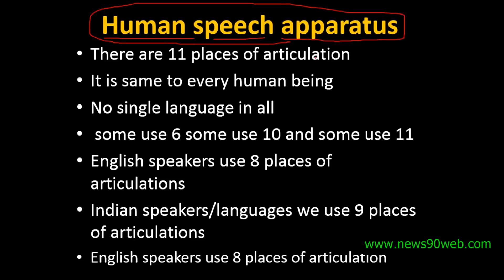Where is the sound produced? Where is the mouth? These are the articulation places. There are 11 places of articulation in total. In India, 9 places are used. English speakers use 8 places of articulation. Some languages use 6 places, some countries use 10 places.